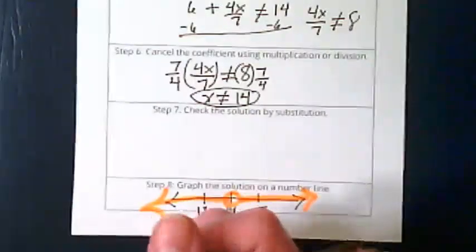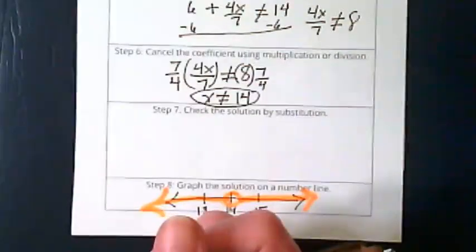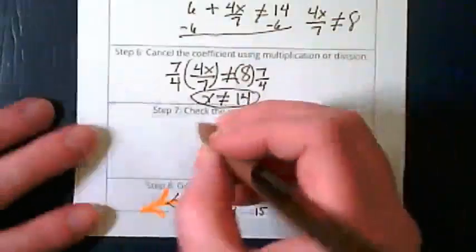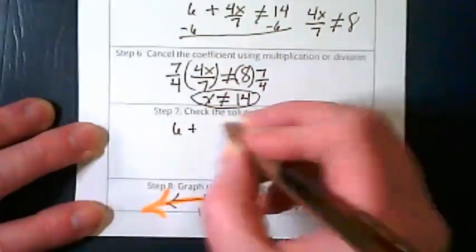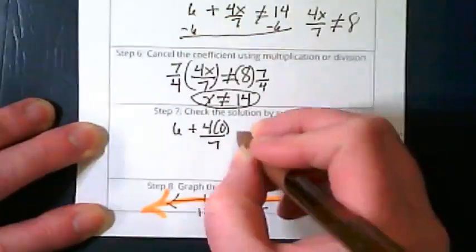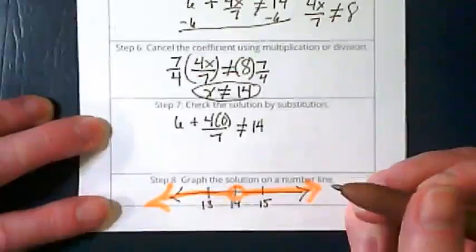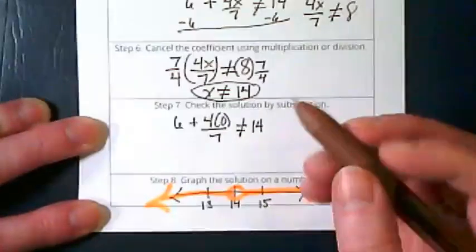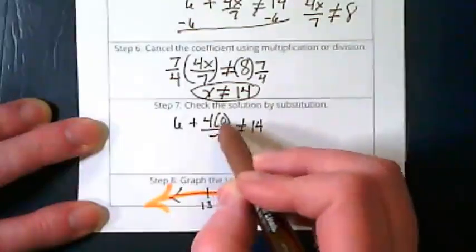Bless you. My favorite number to work with in a situation like this where it looks sort of complex is 0. Think about what happens when I go plug in a 0 for that x. So I'm going to say 6 plus 4 times 0 divided by 7 is not equal to 14. We have to do multiplication first. What's 4 times 0 going to be?